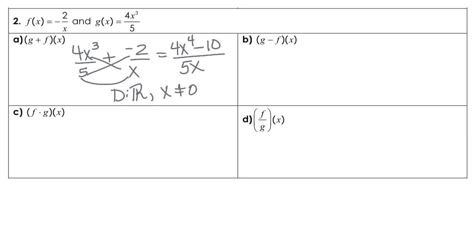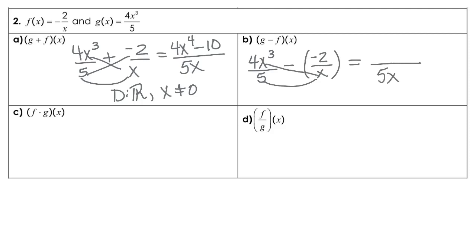For part b, we're subtracting. It's going to be function g of x — 4x cubed over 5 — minus negative 2 over x. Same way, we're going to multiply those denominators, and cross multiply the numerators. That's going to give us 4x to the 4th. Then when we multiply here we get negative 10, but then we have that minus sign, so that's going to be positive 10. The domain will be all real numbers except x cannot be 0.